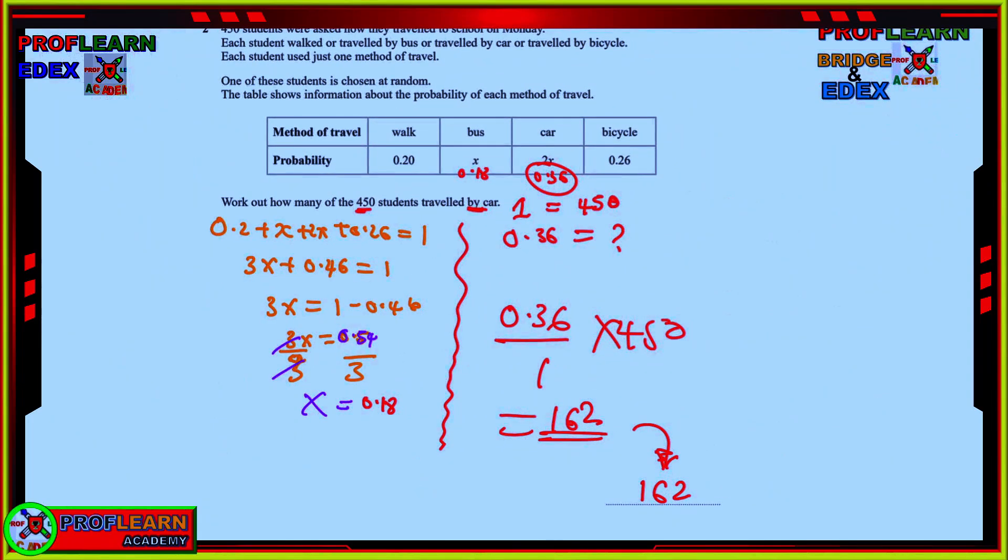Moving to the next question, 250 students were asked how they travel to school on Monday. Each student walked, traveled by bus, traveled by car, or traveled by bicycle. Each student used just one method to travel. We are supposed to work out how many students travel by car. Something that you need to remember here is that all the probabilities add up to 1. So meaning if you add 0.2 plus x plus 2x plus 0.26 must give you 1.